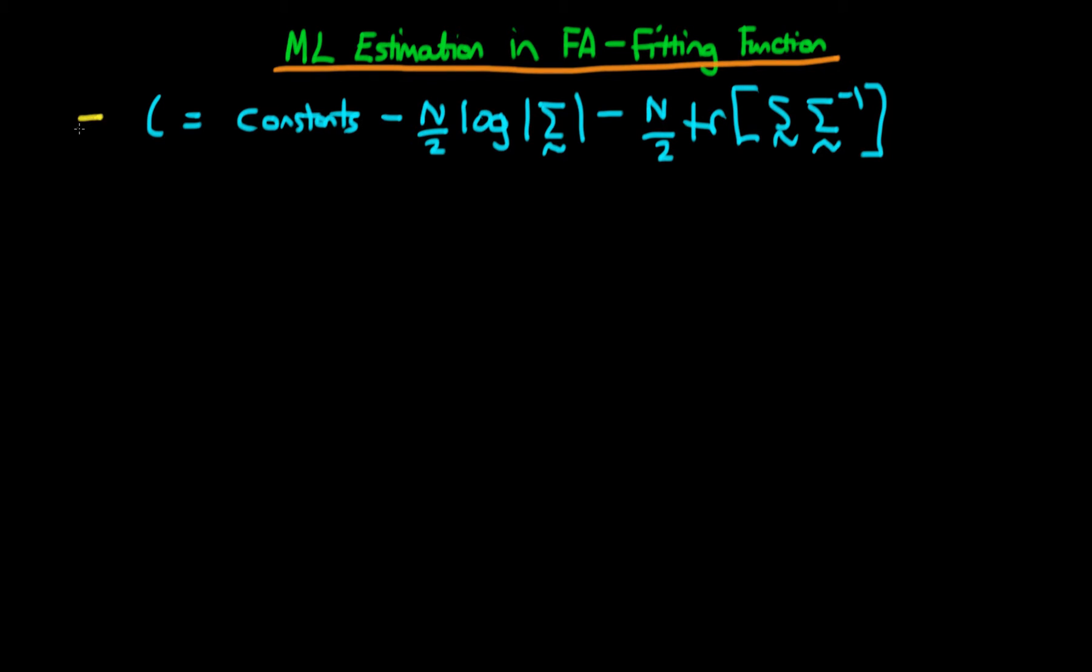At the end of the last video we derived this form of the log likelihood. Just to be clear, I've included in this constants term here the log of 2π which we derived in the last video. I've included it as a constant because constants in the log likelihood don't in general affect the position of the maximum likelihood parameter estimates.